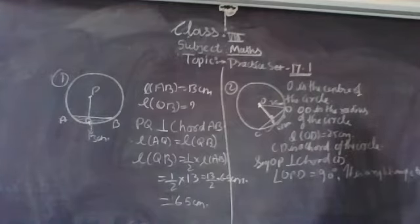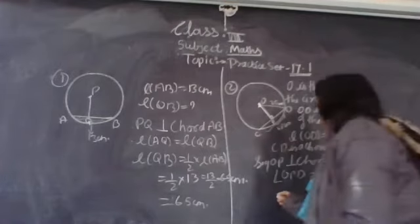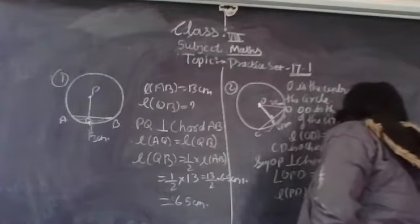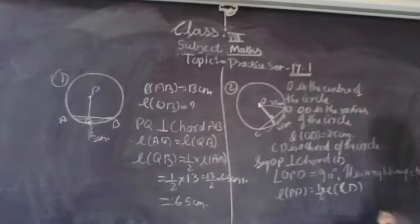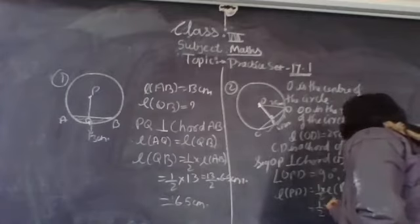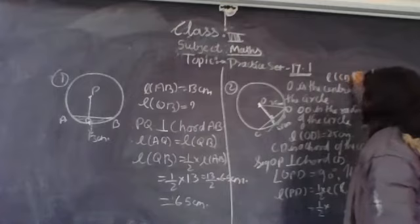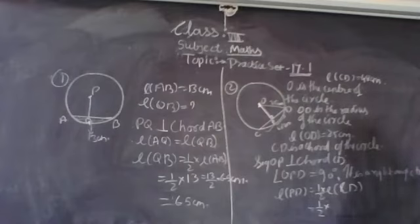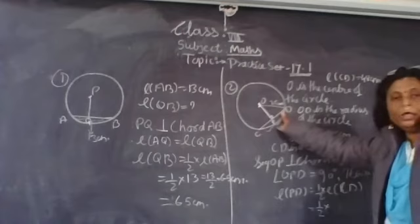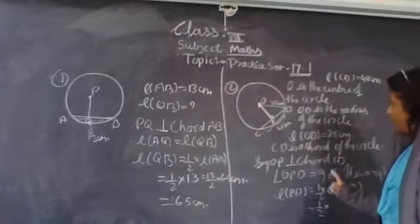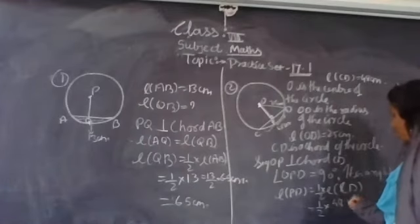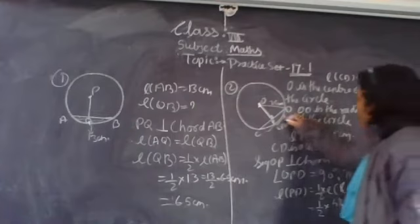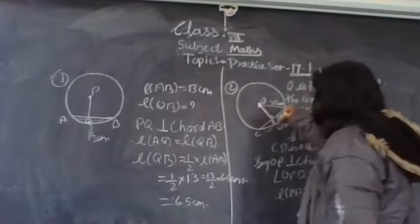Next, we have to find PD. Length PD is equal to half the length of CD. CD is equal to 48cm, so half the length of CD is 48 divided by 2, that is equal to 24cm. So we have PD as 24cm.